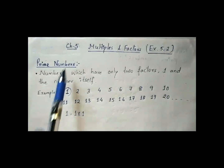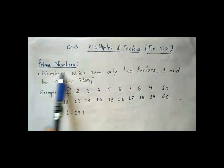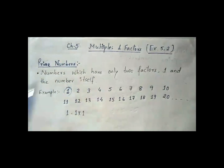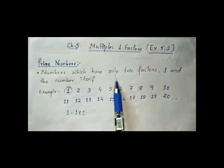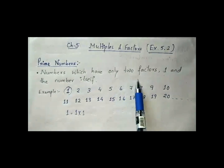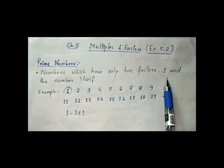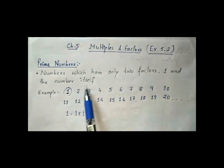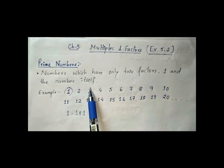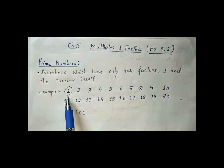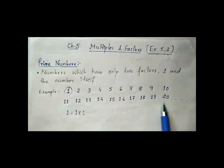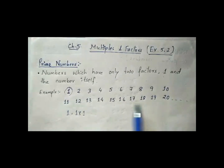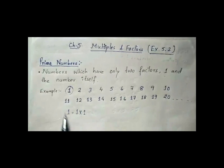Now let us see what are prime numbers. Numbers which have only two factors — one and the number itself. Now let us see these given series of numbers and find which are prime numbers.